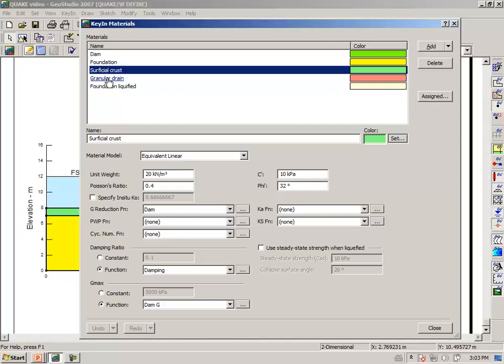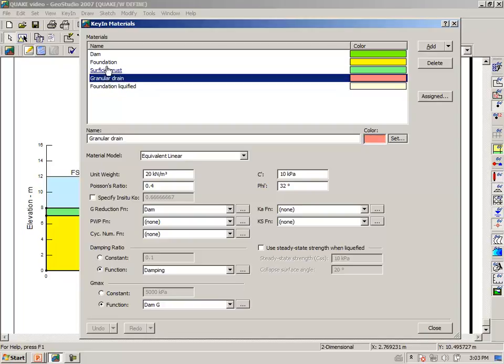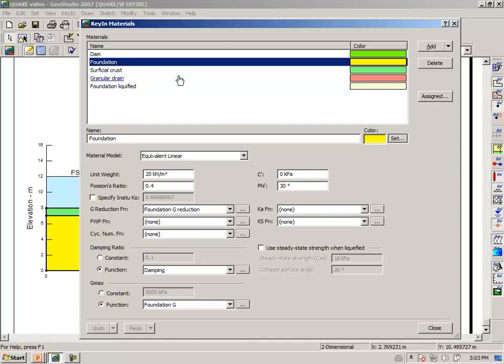What we are saying thereby is that there will be no pore pressure generated by the shaking in the dam embankment material. The same with the surficial crust and in the granular drain material. The foundation, however, that is the loose sand, we now need to say something about the cyclic number function and the pore water pressure function.